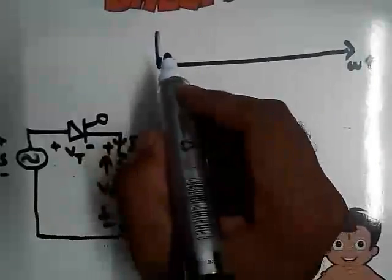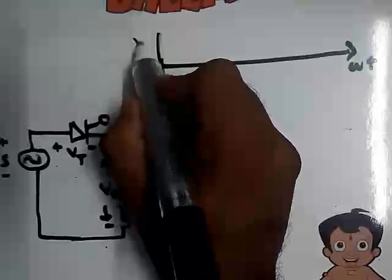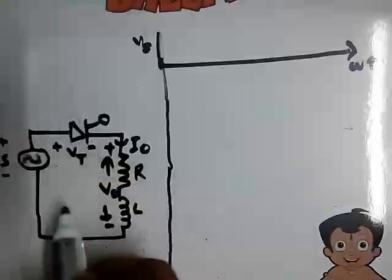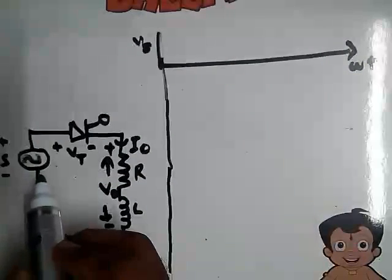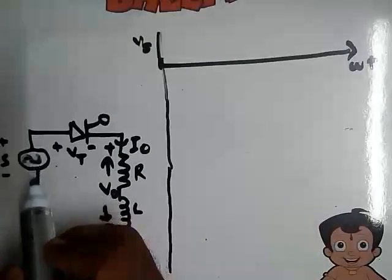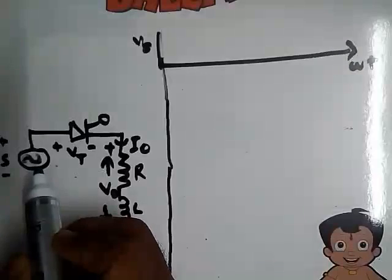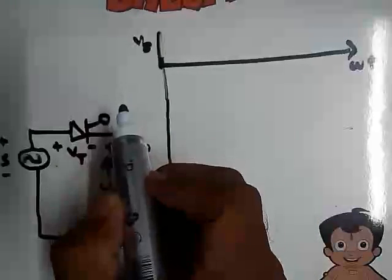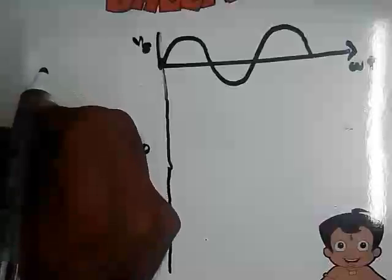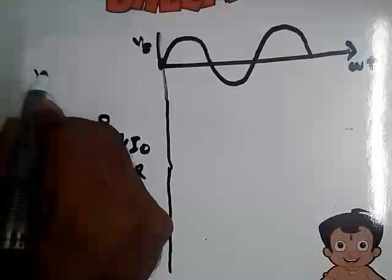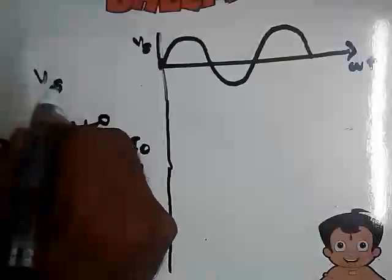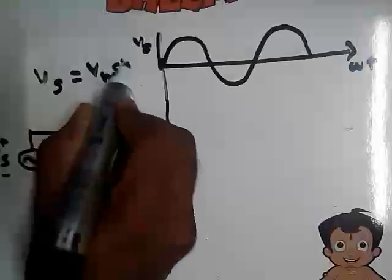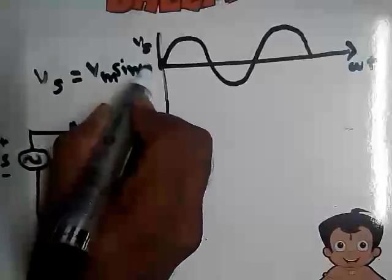First we are going to obtain the waveform of supply voltage, that is Vs. We know Vs is nothing but a sinusoidal voltage, so its waveform is just like a sine wave. That is, we can write Vs as Vs = Vm sin(ωt).